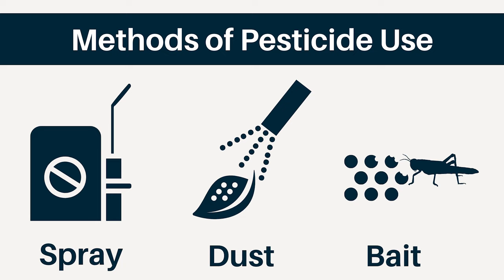Grasshopper control products are available in spray, dust, or bait formulations. Dust and baits are relatively expensive, but can be applied to specific areas without sophisticated equipment. Dusts do not readily adhere to the foliage and must be reapplied frequently. Baits must be consumed and are most effective when host plants are scarce, small, or have dried up.